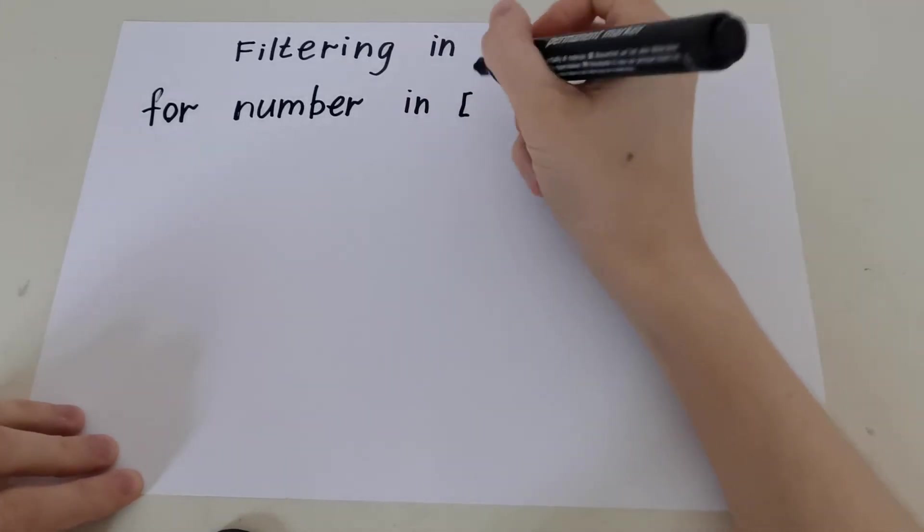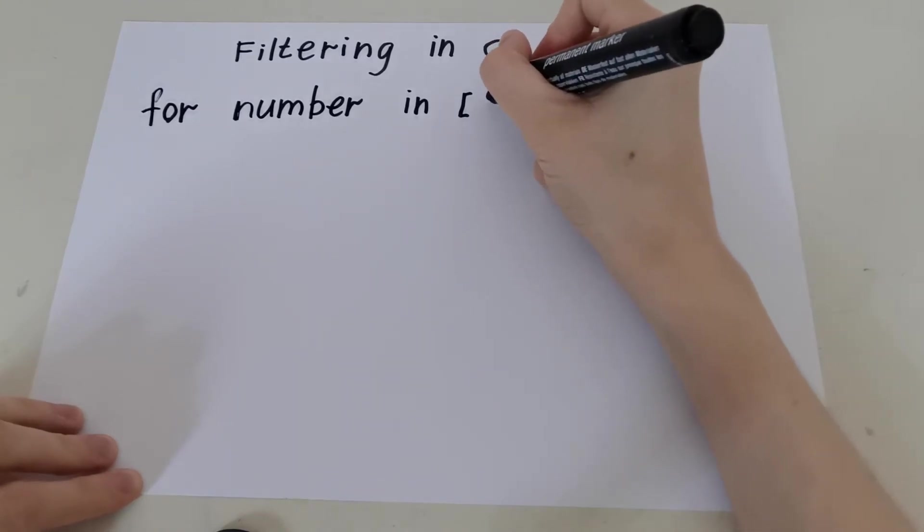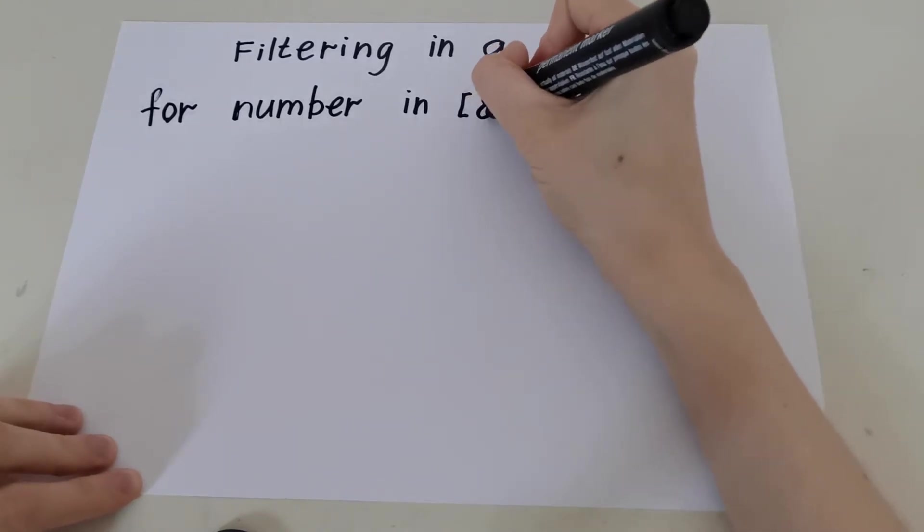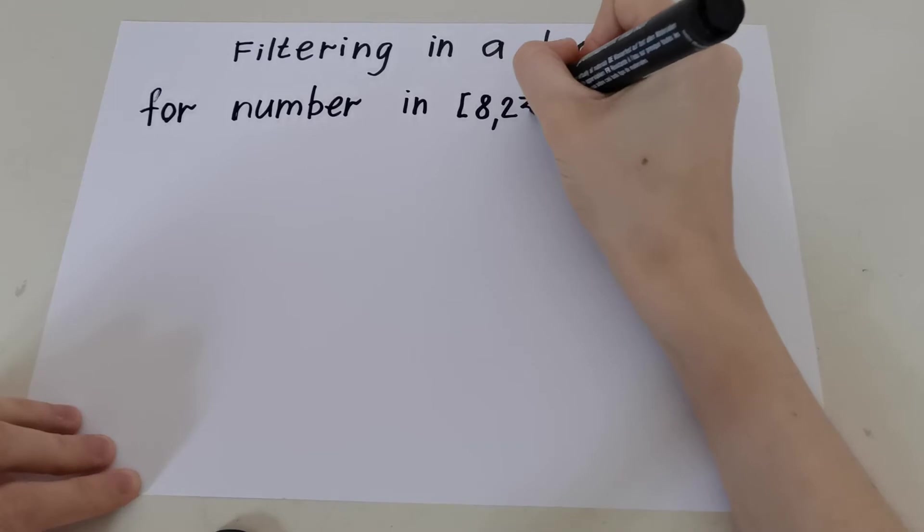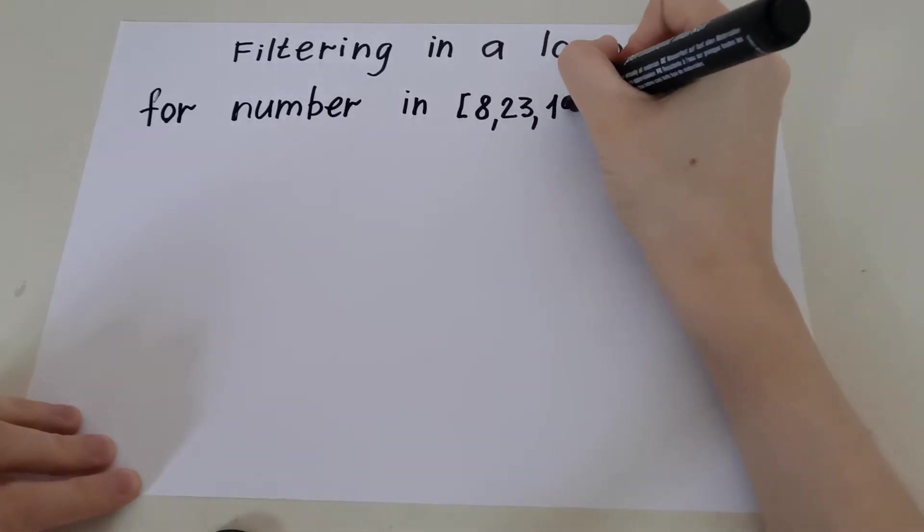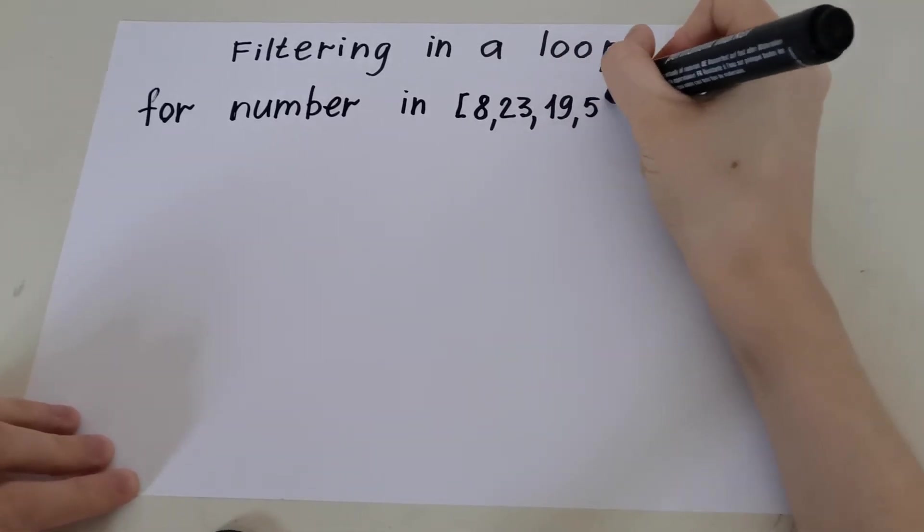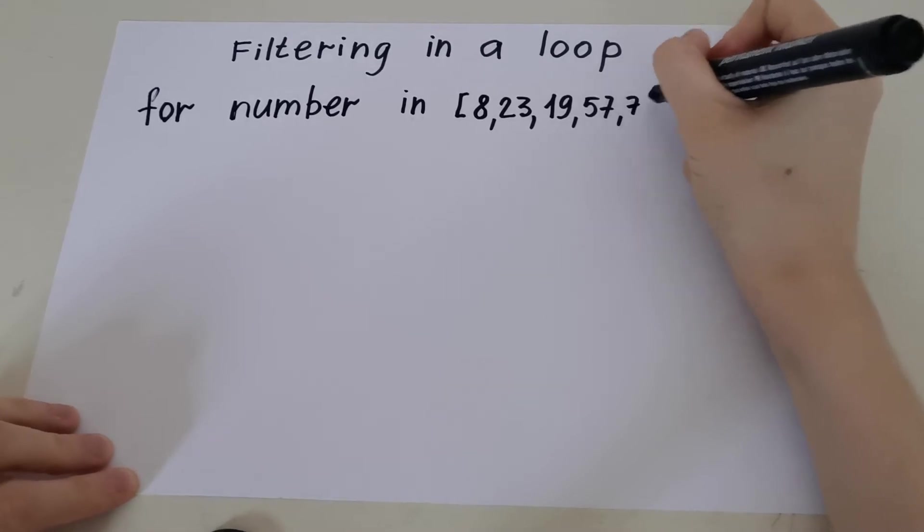Let's take a short list of six elements: 8, 23, 19, 57, 70, 3.